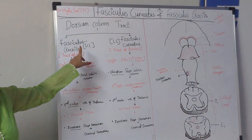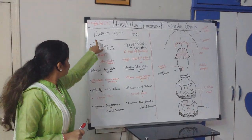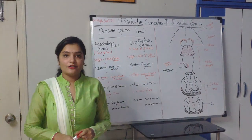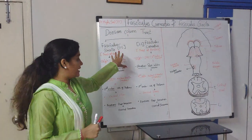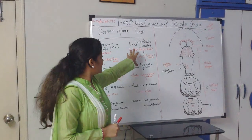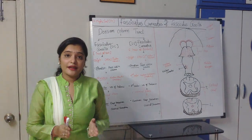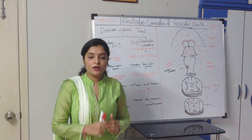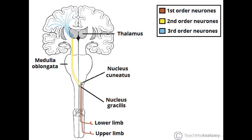The other name of fasciculus gracilis is the tract of Goll, and the other name of fasciculus cuneatus is the tract of Burdach. First I will cover fasciculus gracilis, and second I will cover fasciculus cuneatus. Both tracts travel parallel to each other and carry the same functions. The only difference is that fasciculus gracilis carries sensation from the sacral and lumbar region, whereas fasciculus cuneatus carries sensation from the upper thoracic and cervical region.